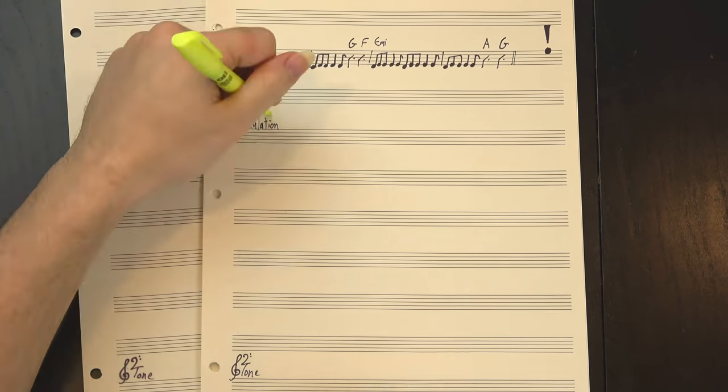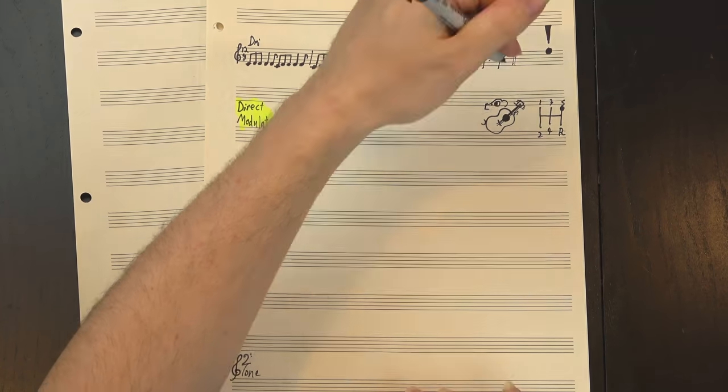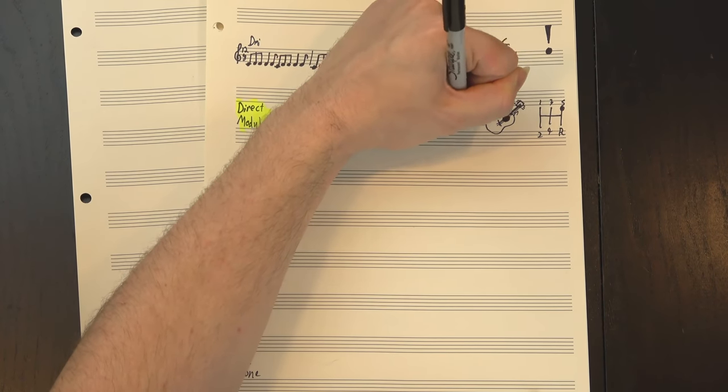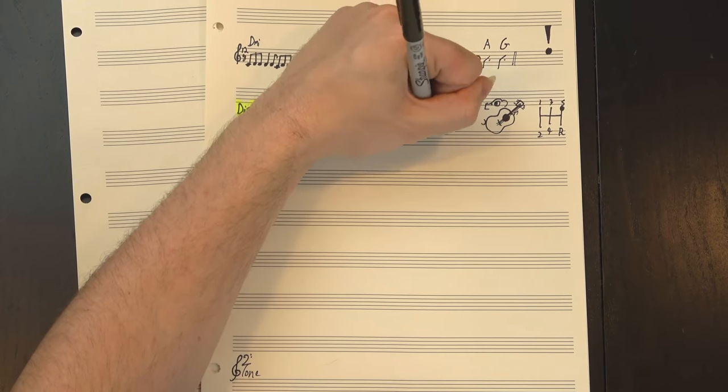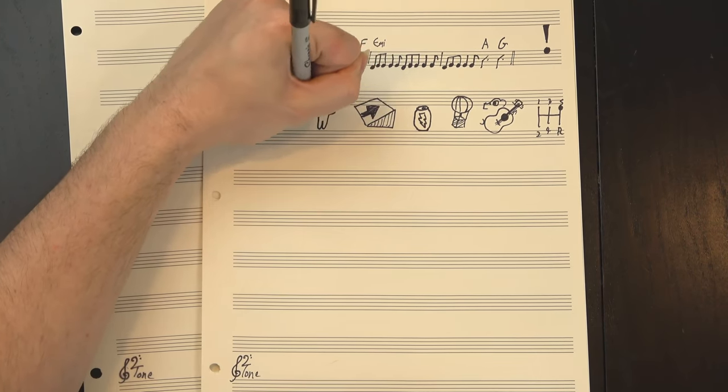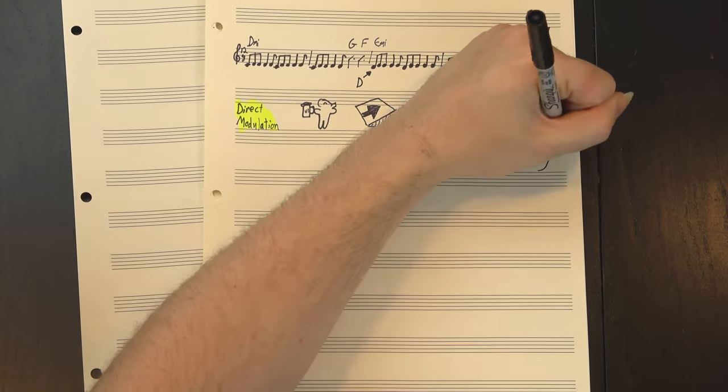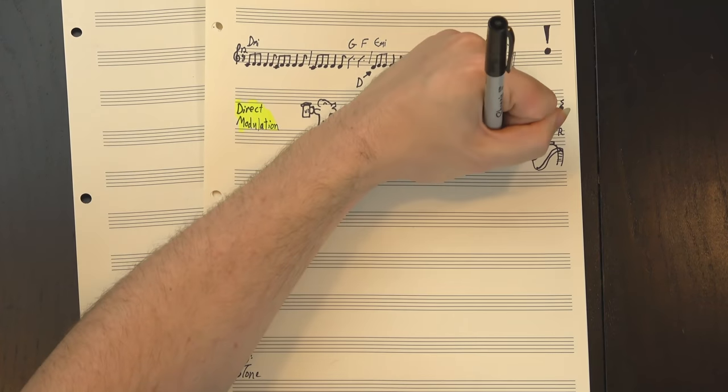which is what's called a direct modulation, or, less formally, a truck driver's key change. This is where you just take the thing you were already playing and start playing it in a different, usually slightly higher, key. It's a great way to get a quick shot of energy, and it lifts the song up, into the bridge. It's especially cool here because that slurred downbeat means that, for a split second, the guitar is still playing D, so it feels like we slide into the new key, instead of just skipping to it.